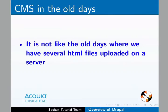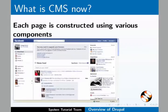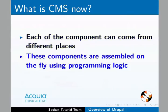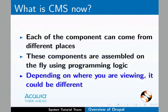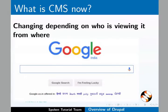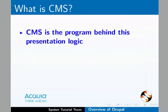What is a CMS? It is not like the old days where we have several HTML files uploaded on a server. In the traditional way, each web page has its own HTML file. Now it is very different — each page is constructed using various components that can come from different places. These components are assembled on the fly using some programming logic. So depending on where you are viewing, say a desktop or a mobile, it could be different. It can also change depending on who is viewing — you may be a student viewing from India or a customer buying something from Singapore. Each of you could see a different page. CMS is the program behind this presentation logic.